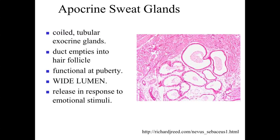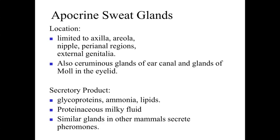The second type of sweat glands are apocrine sweat glands — another tubular exocrine gland. These empty into hair follicles and become functional at puberty. They have a very wide lumen relative to the height of surrounding cells, and are lined by simple cuboidal epithelium. Apocrine sweat glands release their secretory product in response to emotional stimuli. They're found in the axilla, areola, nipple, perianal regions, and external genitalia, releasing glycoproteins, ammonia, and lipids in a proteinaceous milky fluid. It's thought they may produce pheromones.